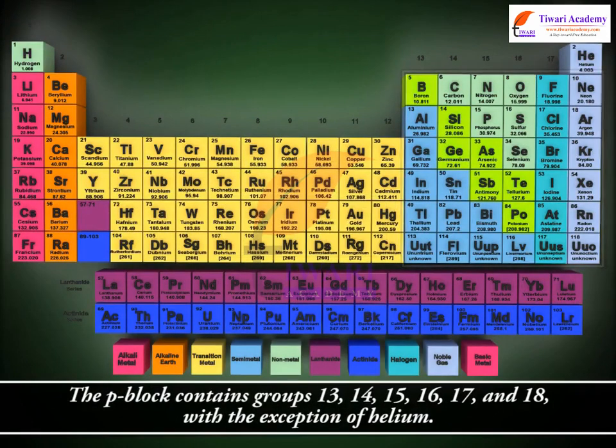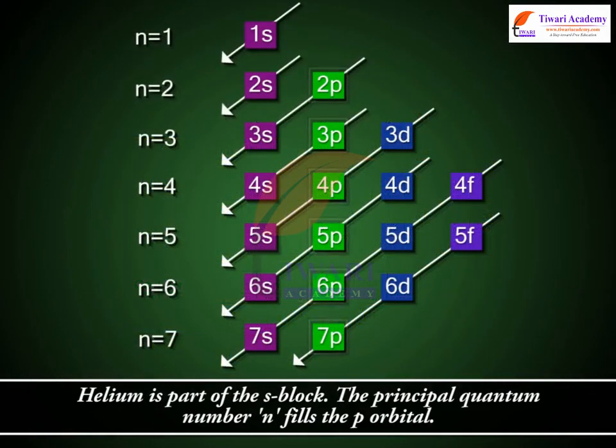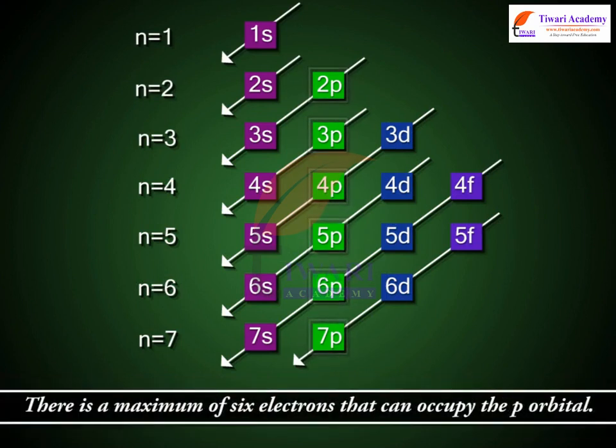The P block contains groups 13, 14, 15, 16, 17 and 18, with the exception of helium. Helium is part of the S block. The principal quantum number, n, fills the P orbital. There is a maximum of 6 electrons that can occupy the P orbital.